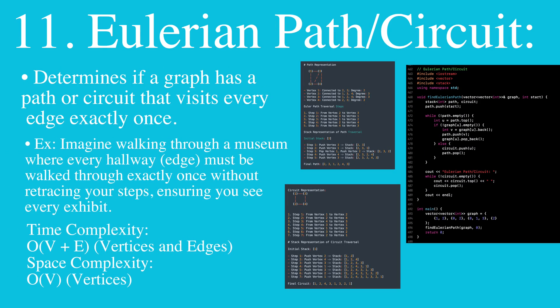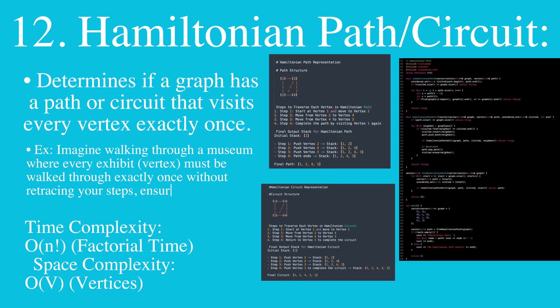Then we have Eulerian path/circuit, which determines if a graph has a path or circuit that visits every edge exactly once. Then we have Hamiltonian path/circuit, which determines if a graph has a path or circuit that visits every vertex exactly once.